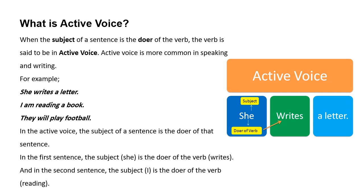Active voice وہ ہوتا ہے جس میں subject ہی doer ہوتا ہے، subject ہی کام کرنے والا ہوتا ہے۔ For example: 'She writes a letter' — subject 'she' ہے اور وہ لکھنے کا عمل perform کر رہی ہے، اور object 'letter' ہے۔ 'I am reading a book' — 'I' subject ہے اور وہی کتاب پڑھنے کا عمل perform کر رہا ہے۔ 'They will play football' — یہ future indefinite tense کا جملہ ہے اور 'they' subject perform کر رہا ہے۔